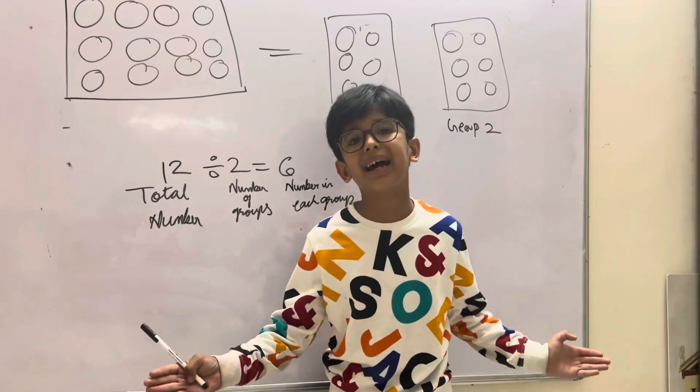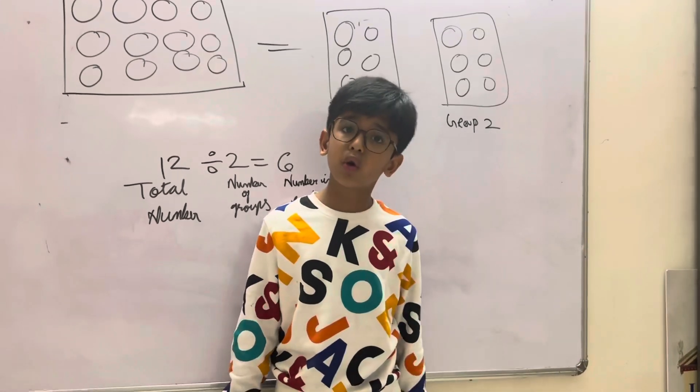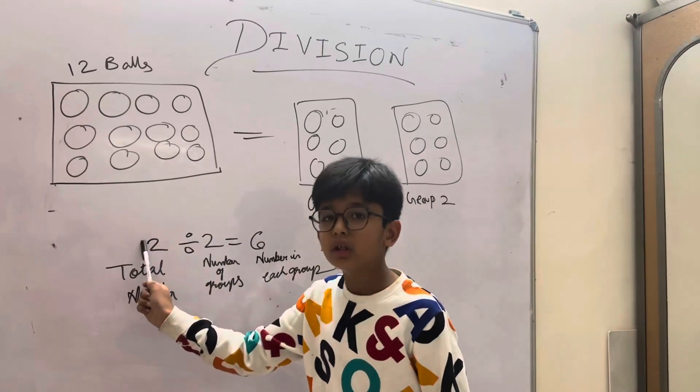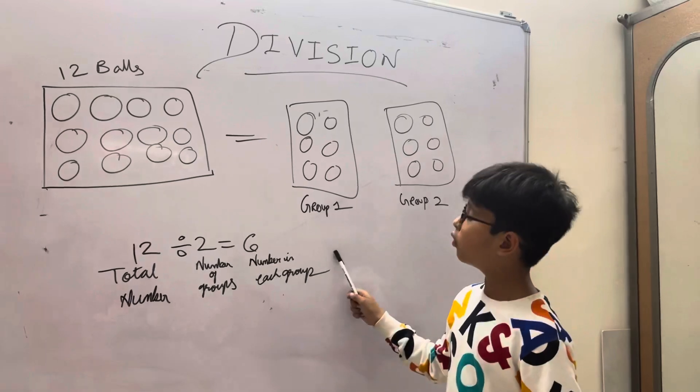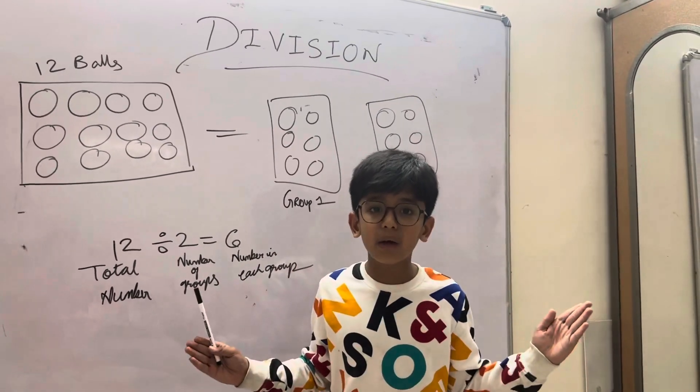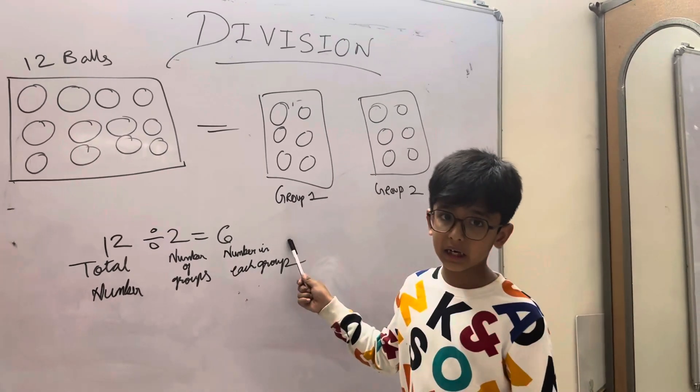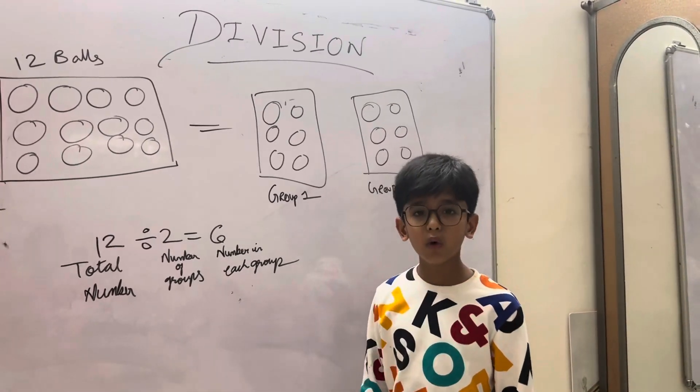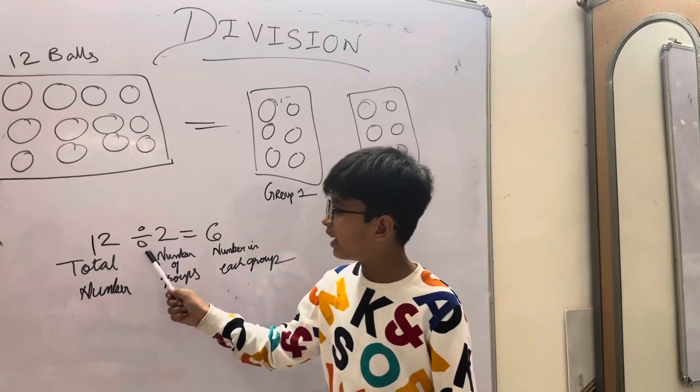And how many are there in each group. In each parameter, we have to divide in two equal groups. So first, how many do we have to divide in group one? First, we have to divide 12 divided by 2.